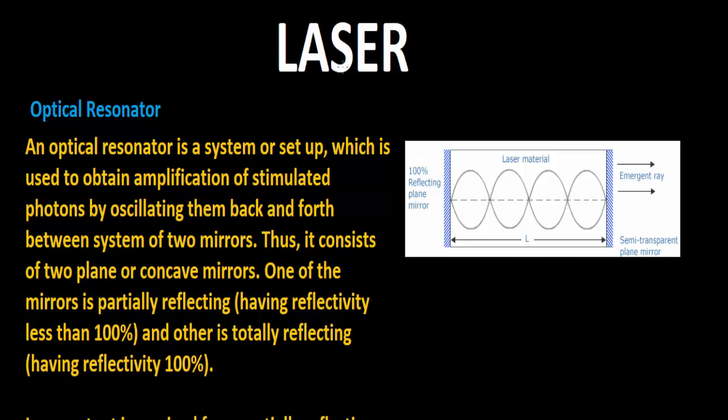But for coherent radiation, we need photons to be in the same or fixed direction. The optical resonator is used for restricting the photons in a particular direction to get coherent laser radiation. This is the device of optical resonator.